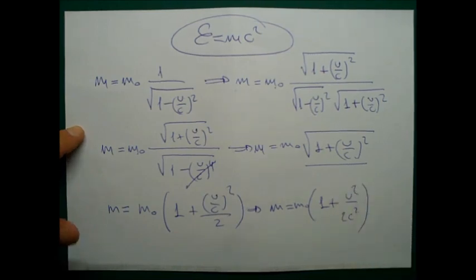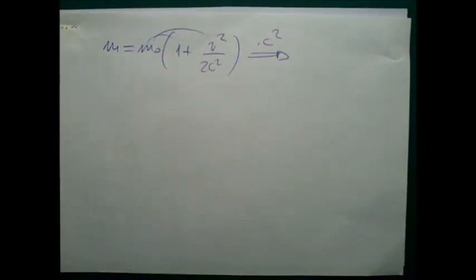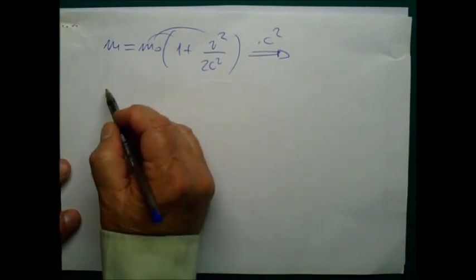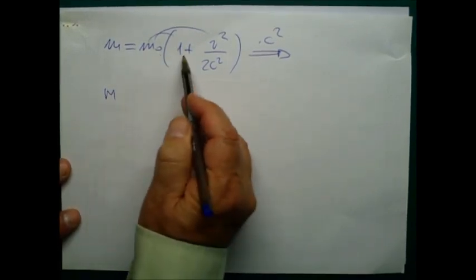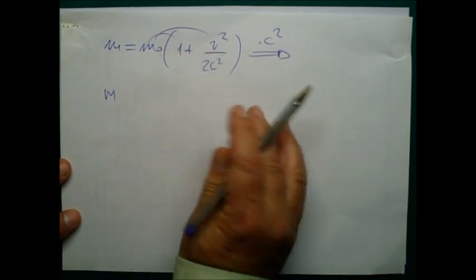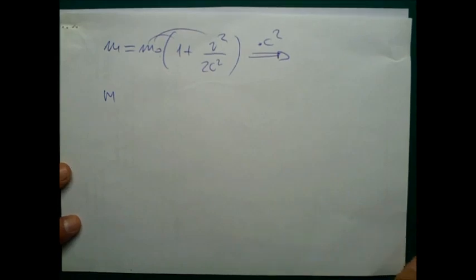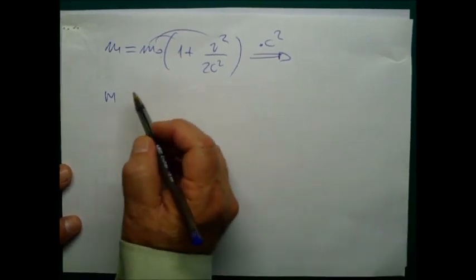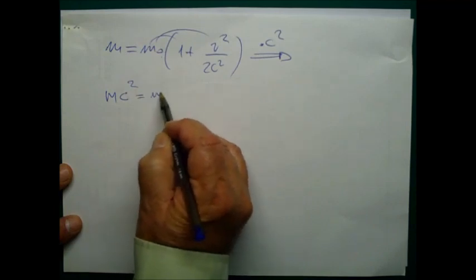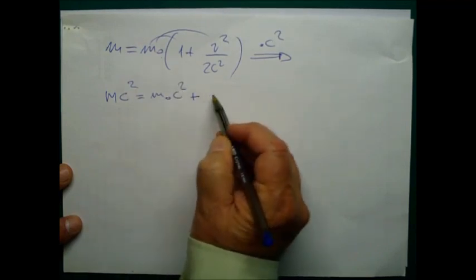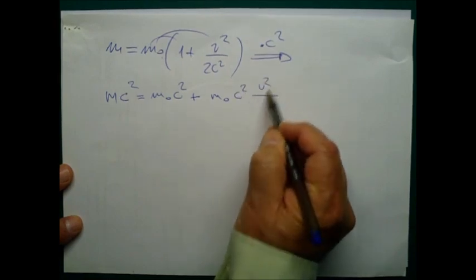I distribute this equation and I get M equals M₀ times 1 plus V squared over 2 C squared, and multiply by C squared. I get this equation here: M C squared equals M₀ C squared plus M₀ C squared V squared over 2 C squared.